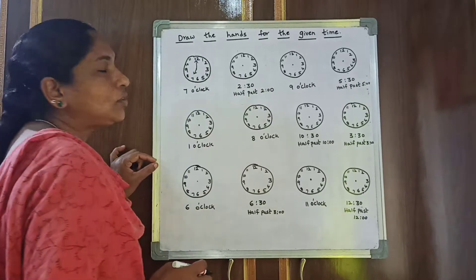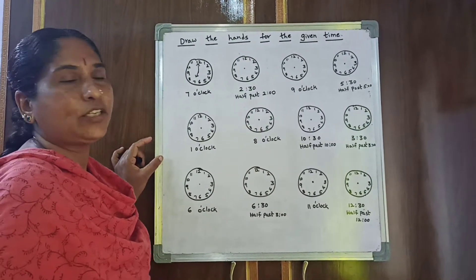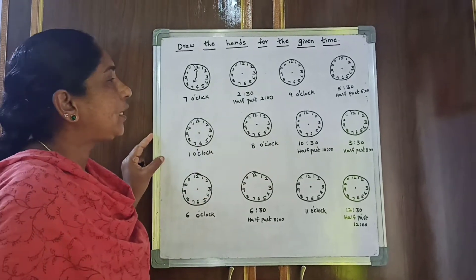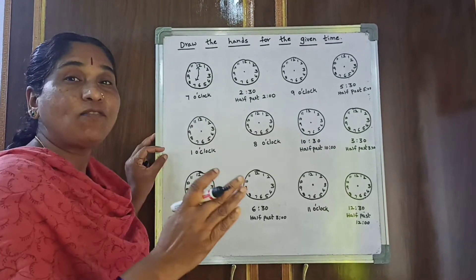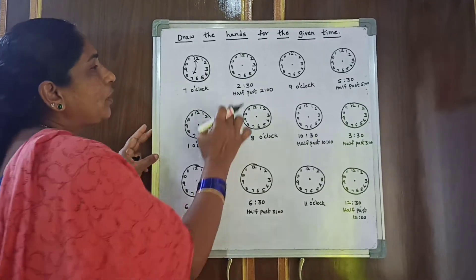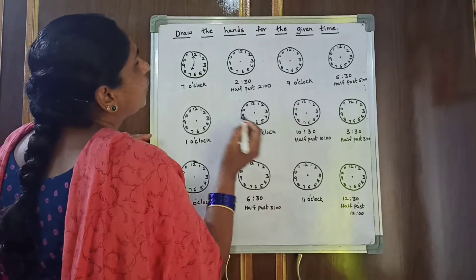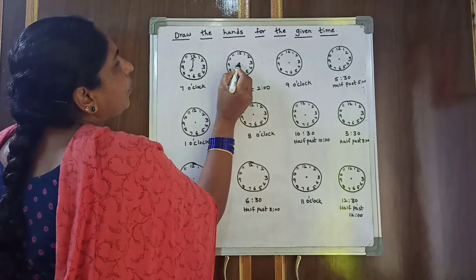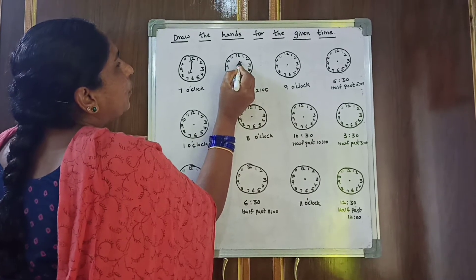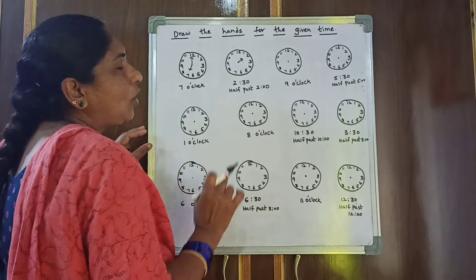Now see the next one: 2:30, or half past 2. So 2 is the hour hand — again, from the middle point you take the short hand to 2. Then 30 — I already told you in the earlier video.